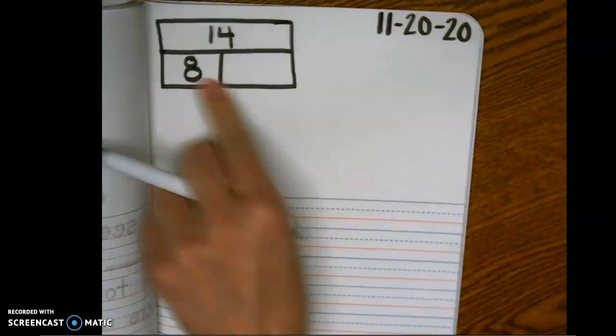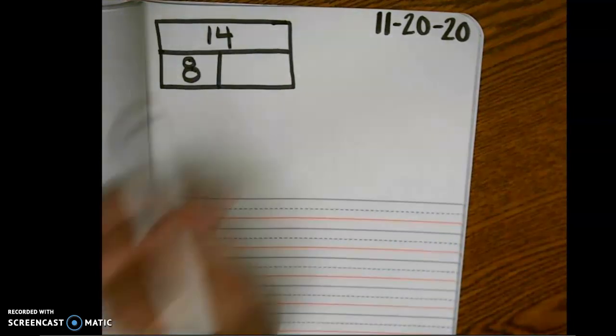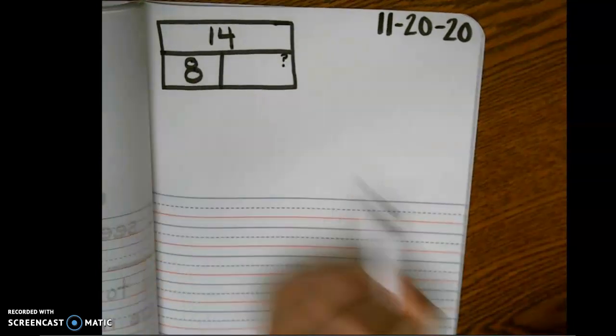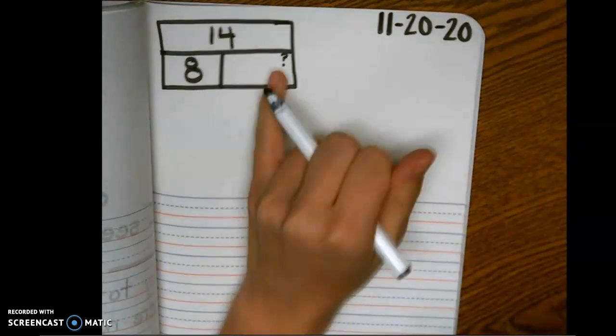One of our parts we know, and we're going to let's say it's 8. So we know one of our parts, we need to find our missing part. So what strategy can you use to find 8 plus what equals 14?